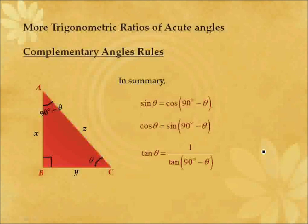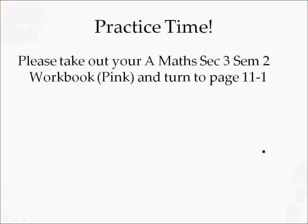To summarize: sine theta equals cosine of 90 degrees minus theta; cosine theta equals sine of 90 degrees minus theta; and tangent theta equals 1 over tangent of 90 degrees minus theta. It's practice time — please take out your additional mathematics Sec 3 SAM 2 workbook, which is the pink one, and turn to page 11-1. Thank you for watching this video.